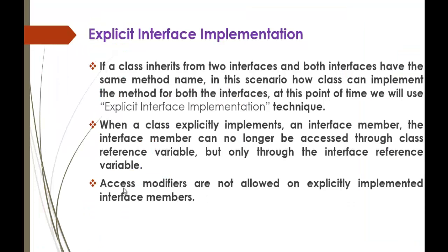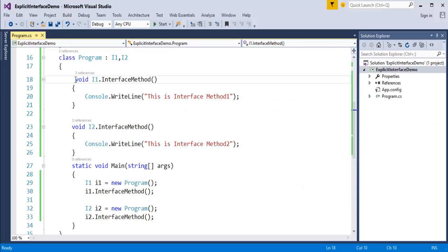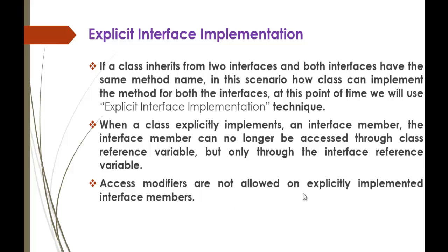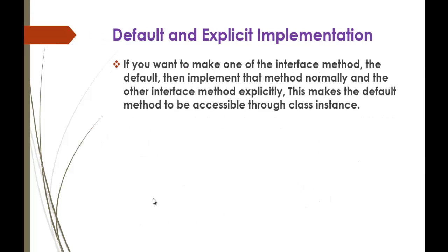Coming back to the presentation: access modifiers are not allowed on explicitly implemented interface members. This is what we did — you can't give access modifiers like public when explicitly implementing an interface method. That's what this rule explains: access modifiers are not allowed on explicitly implemented interface members.